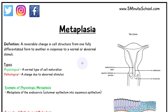Welcome to 5-Minute School. In today's video we're going to be talking about metaplasia. The definition of metaplasia is a reversible change in cell structure from one fully differentiated form to another form in response to a normal or abnormal stimulus. The types of metaplasia can either be physiological — a normal type of cell maturation — or pathological, which is a change due to an abnormal stimulus.